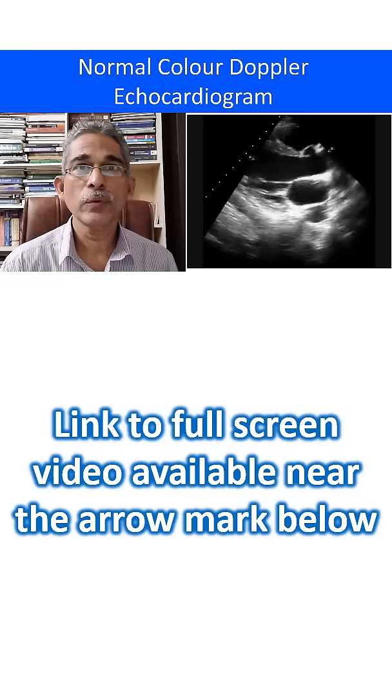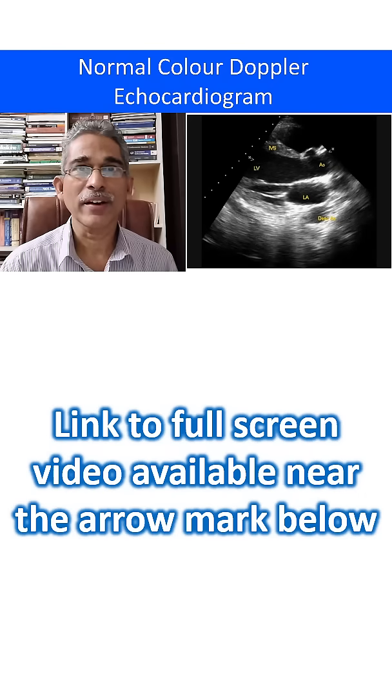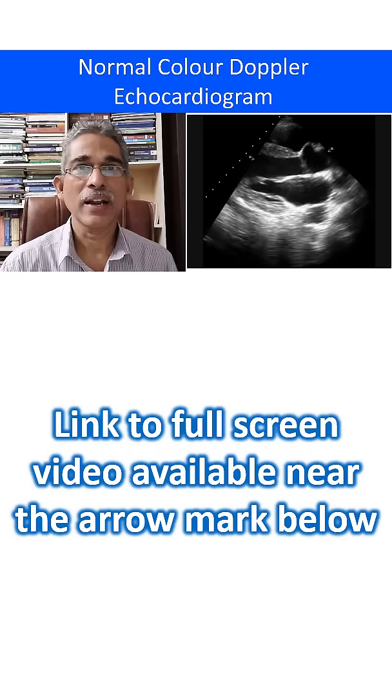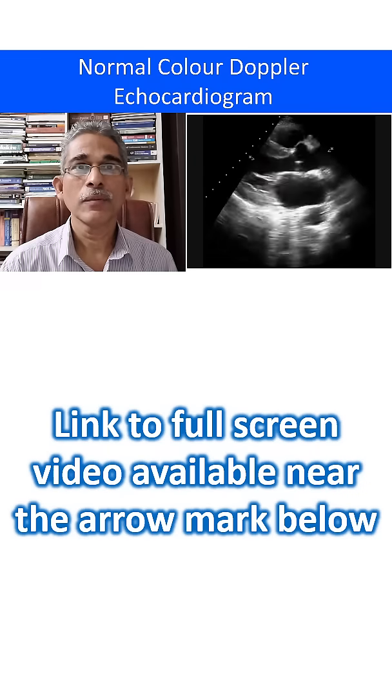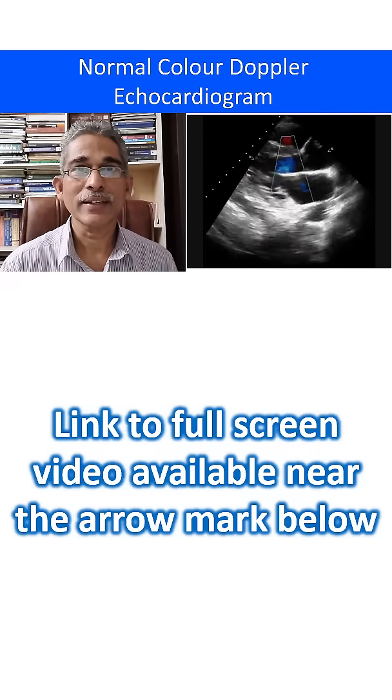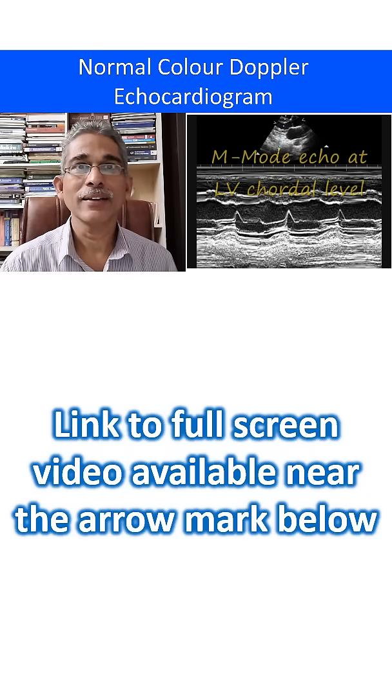We will review a few video clips from a normal color Doppler echocardiogram in multiple views like parasternal long axis view, which is the first view often obtained in adult echocardiography, parasternal short axis view, apical four chamber view, and suprasternal view.